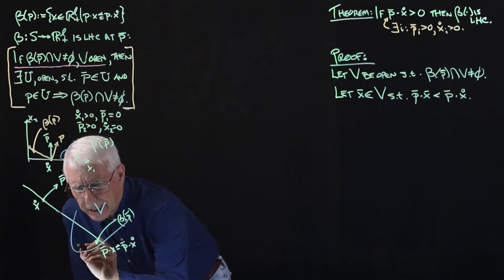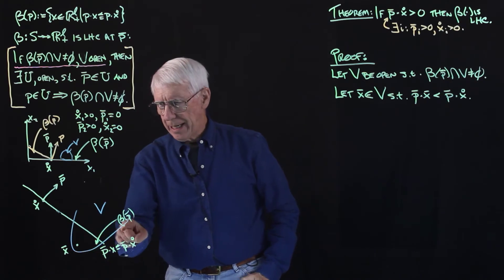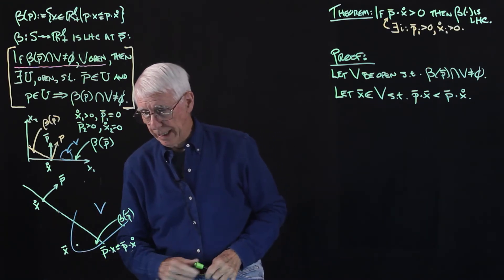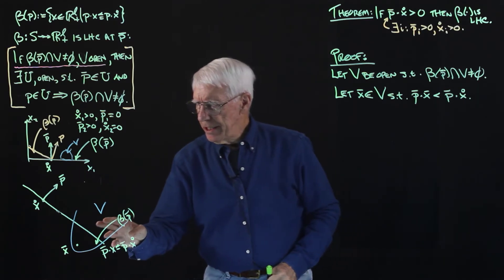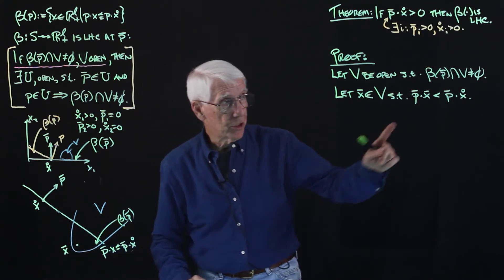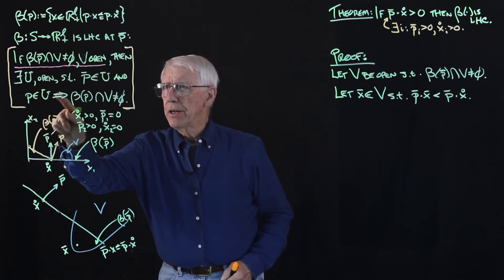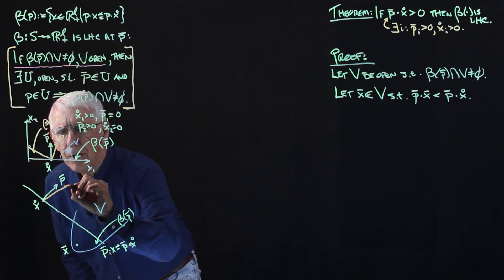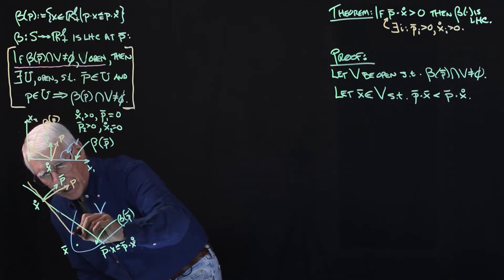Geometrically, if we have an open set intersecting with the budget set, there's going to be a point that is strictly below — not on — the budget constraint and still in the open set V. Now, we want to show that for any price list sufficiently close to P bar in a neighborhood of P bar, the budget set still intersects V. Take a price list close to P bar — its budget constraint is here, and this is now the budget set for this new price P, where P dot X equals P dot X circle.